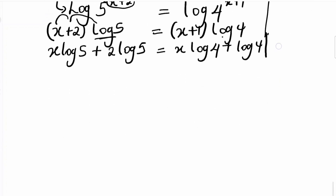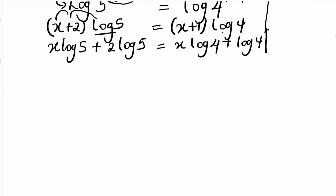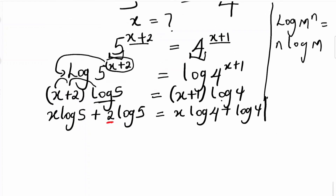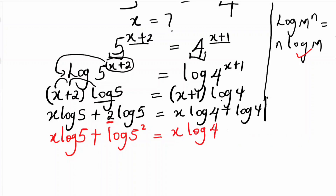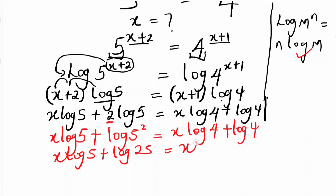And log 4 times 1 will give you log 4. So since we have this, the next step is to look at the 2 and rewrite it. We can write 2·log 5 as log(5²), because since we multiplied it, it's the same thing. And this is equal to x·log 4 plus log 4. Then 5² is 25, so we have x·log 5 plus log 25 is equal to x·log 4 plus log 4.